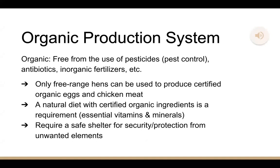Poultry production systems can be classified in three categories, starting with the organic production system. Organic means it is free from the use of pesticides such as pest control, which is usually used to manage flies and other bugs. It is also free from antibiotics, inorganic fertilizers, and other national standards. Only free-range hens can be used to produce certified organic eggs and chicken meat. A natural diet with certified organic ingredients is required, consisting of essential vitamins and minerals. This production system also requires safe shelter for security and protection from unwanted elements.